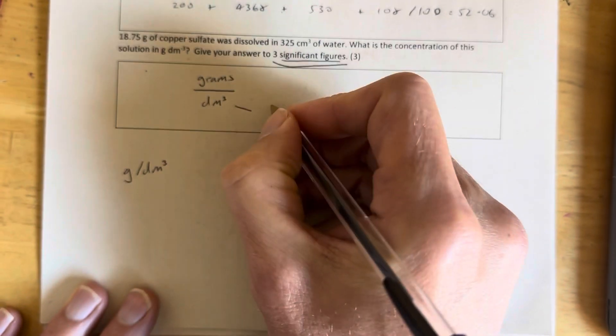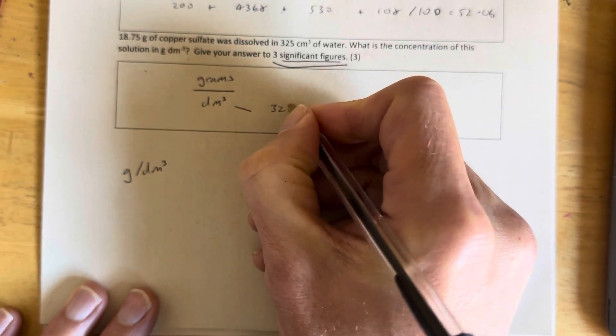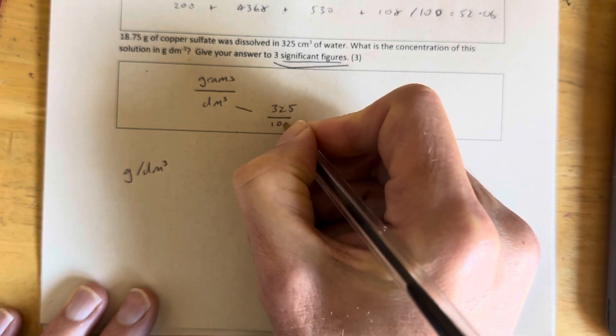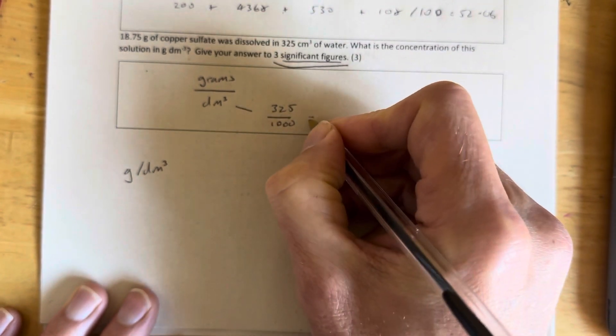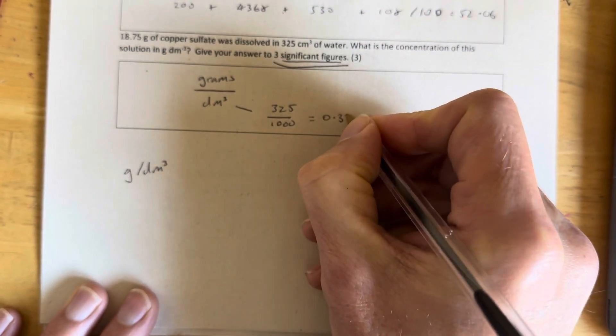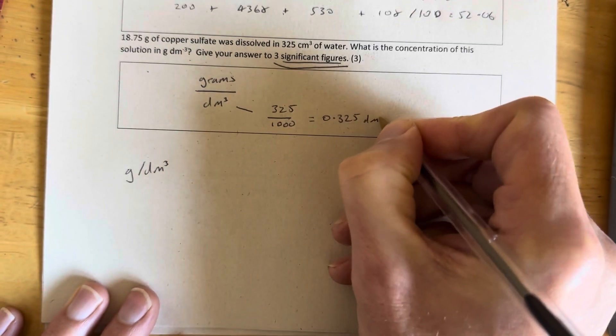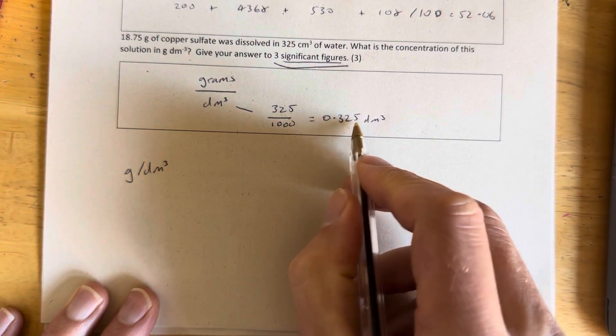The first thing we have to do is take our 325 and divide it by a thousand to make it into decimetre cubed. So that's 0.325 a decimetre cubed. So our decimetre cubed is 0.325.